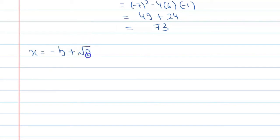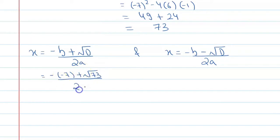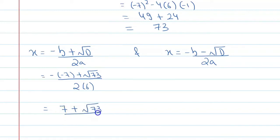x equals minus b plus root d upon 2a, and x equals minus b minus root d upon 2a. Now put in the values. You know that b is equal to minus 7, so it is minus minus 7 plus under root 73 upon 2 into 6. This value will become 7 plus under root 73 upon 12.